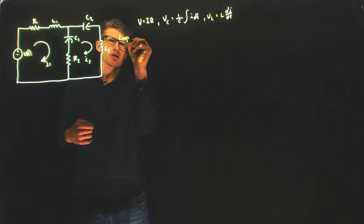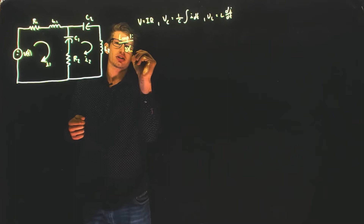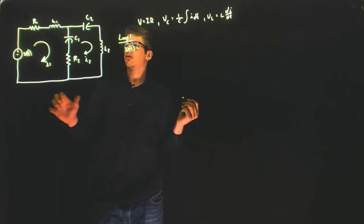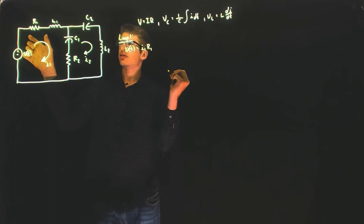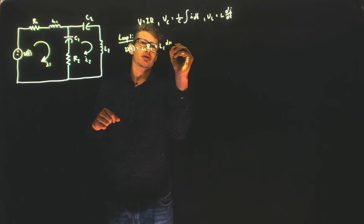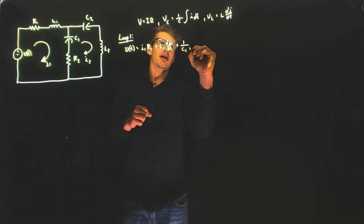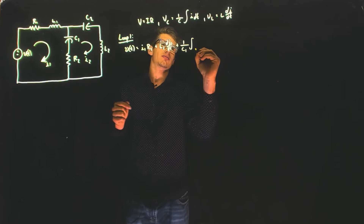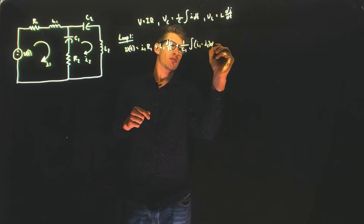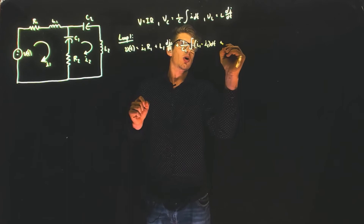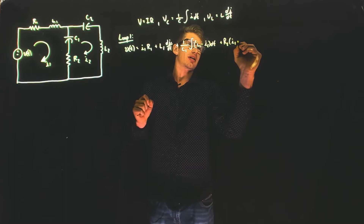Now we're going to look at loop number one. We see that we have a voltage source Vt and that is going to be equal to the sum of the voltage drops as we go throughout this loop. So we have I1 times R1 for this resistor, L1 times the derivative of current with respect to time, plus the voltage of the capacitor: 1 over C1 times the integral of I1 minus I2. Then finally we have the voltage of the last resistor, which is also the difference between I1 and I2. This is our first loop equation.